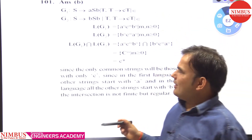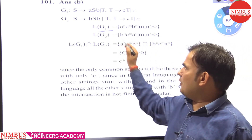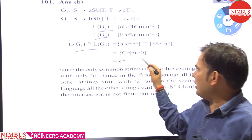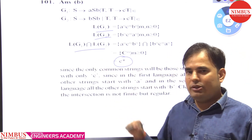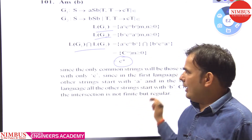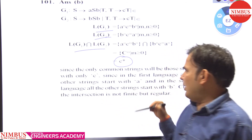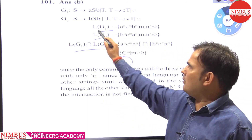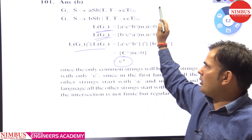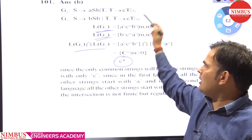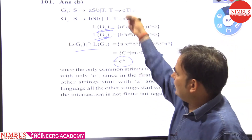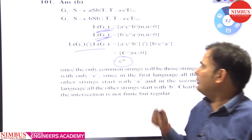To verify, generate the strings from L(G1) and L(G2) and find their intersection. You will get c*, the Kleene closure of c. Since c* is an infinite set, it is not finite — but it is regular. You can derive this by generating strings from the given grammars.